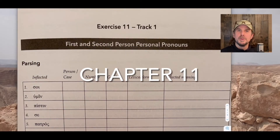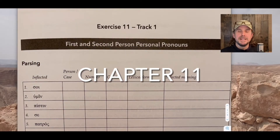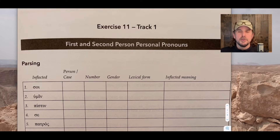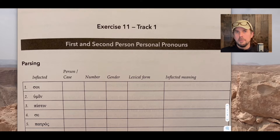Shalom. Here we are with chapter 11 of Mounce's Basics of Biblical Greek Workbook, the fourth edition. I'm doing some homework prep here where we look at the first examples from each of the sections of the workbook: the parsing, the warm-up, and the translation.